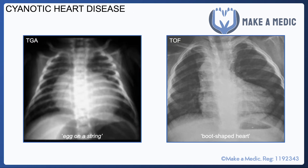Regarding X-ray appearances, which sometimes come up in exams: in transposition of the great arteries, the chest X-ray is described as an 'egg on a string' appearance, whereas in tetralogy of Fallot it is described as a 'boot-shaped heart'.